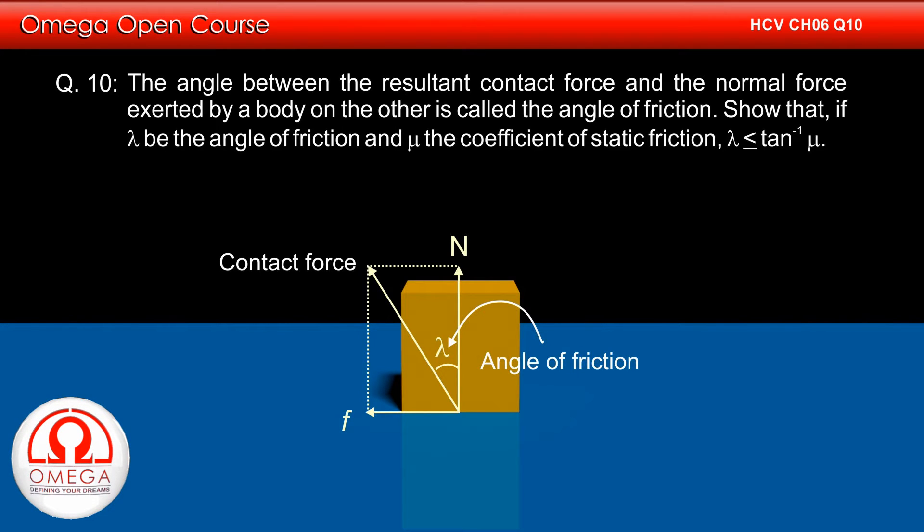So that, if lambda be the angle of friction and mu the coefficient of static friction, then lambda is less than or equal to tan inverse mu.